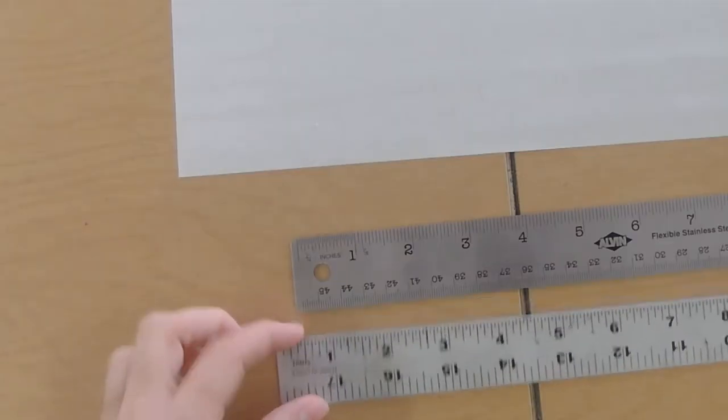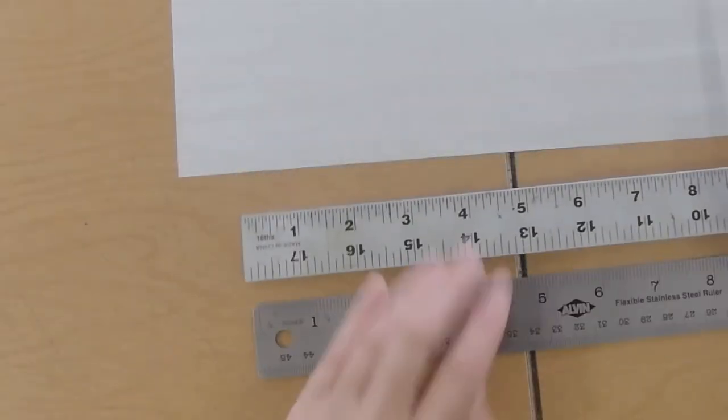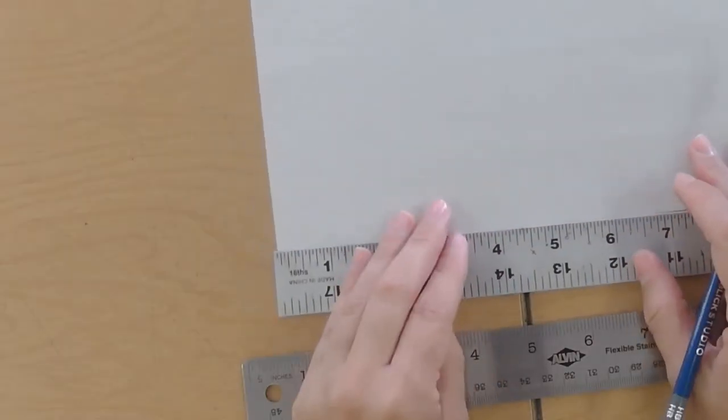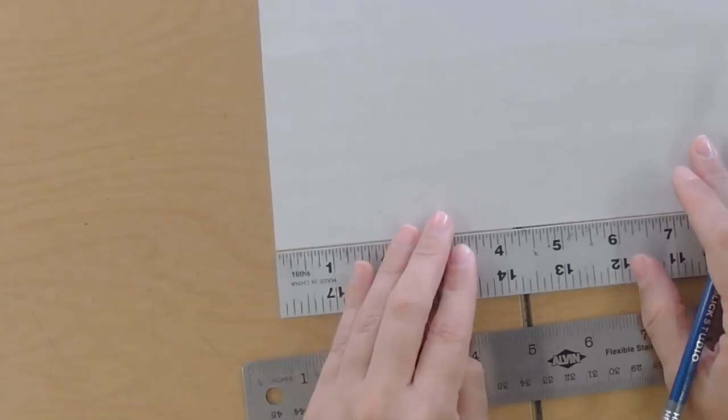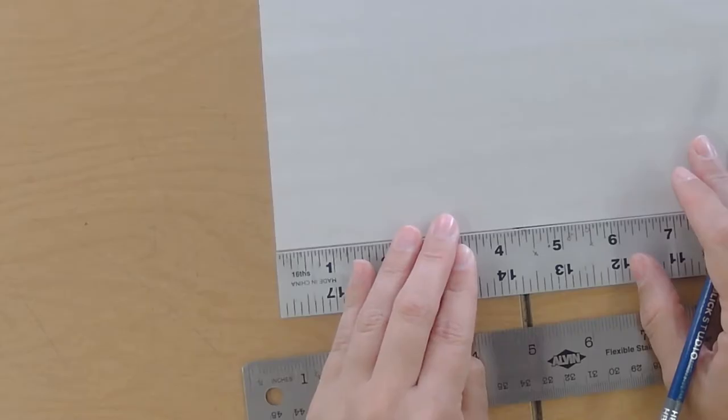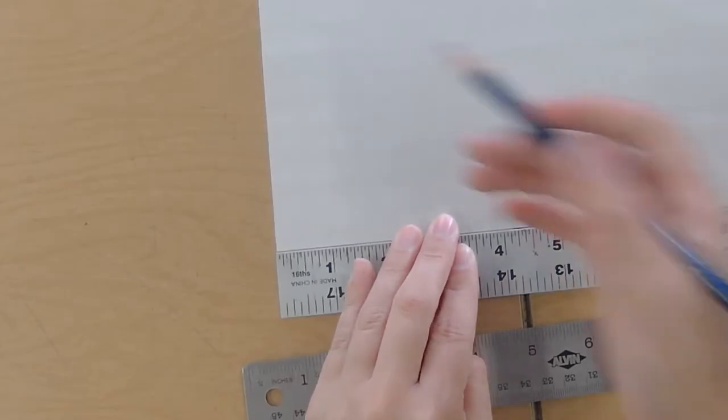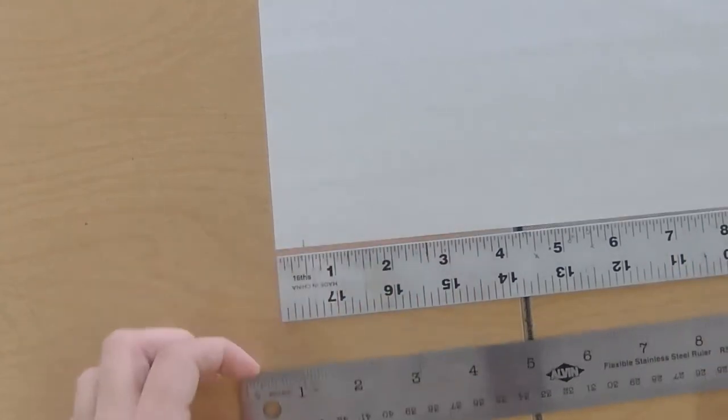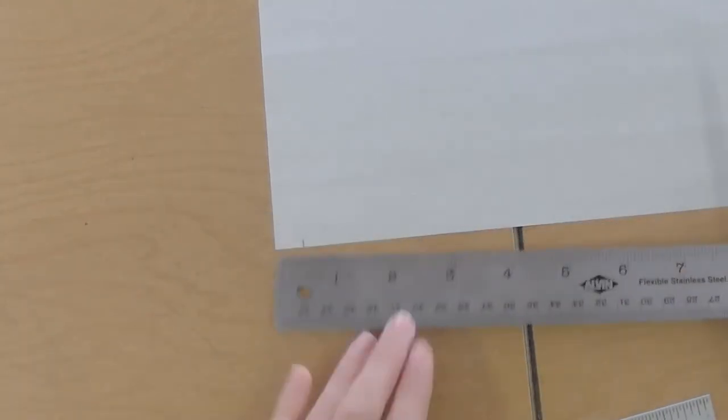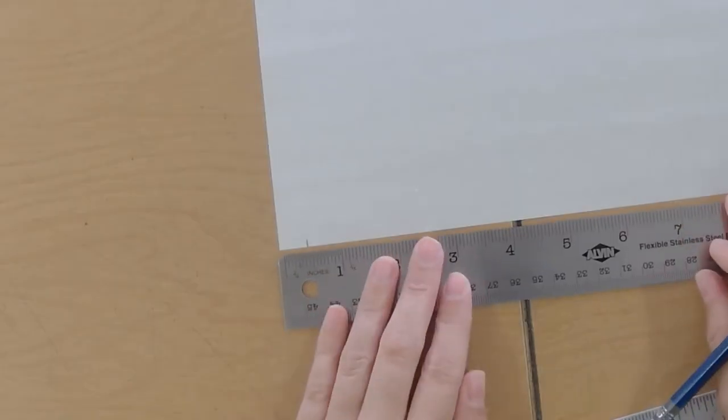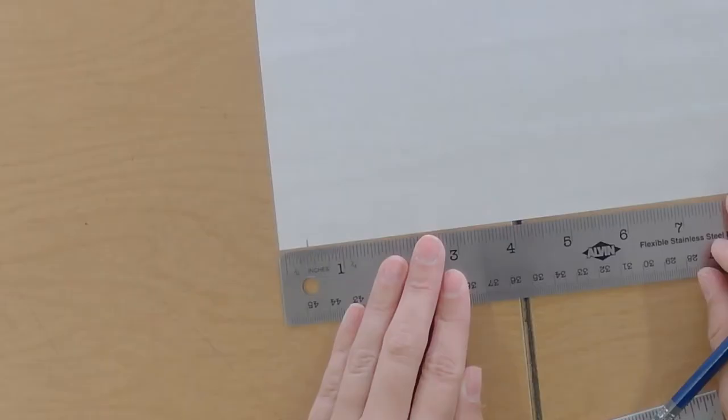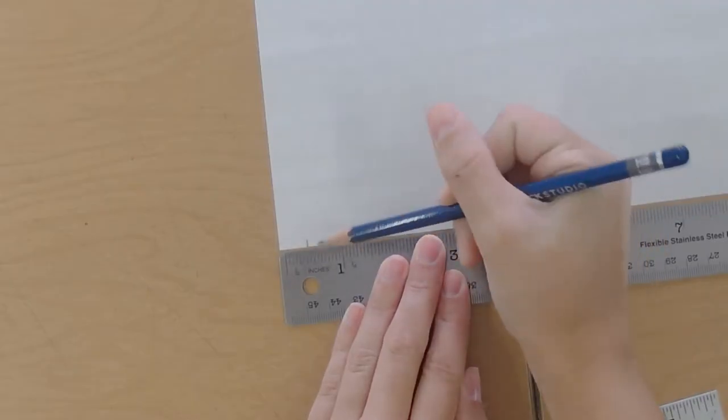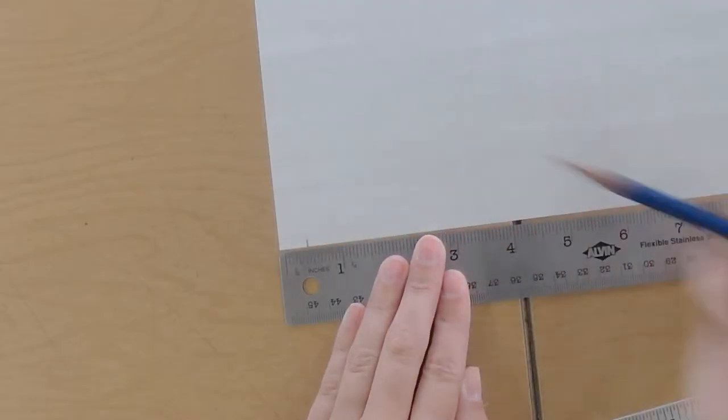So the reason why this is important is if you're trying to create a half inch border, if you're using this ruler, all you'd have to do is line up the paper with the end of the ruler and then do a half inch. This one's a little bit easy. However, with this one, notice that I can't just line it up with the end of the ruler again because zero is right here and my half inch would be here. And that's a lot different.